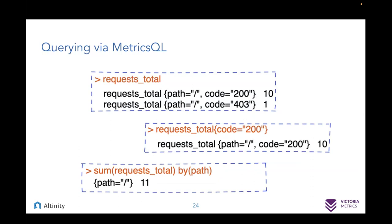I want to give some examples of how MetricsQL works. The first query requests all metrics with the name 'request_total', and we get two time series in response. The second query requests only those time series which have status code 200 — you specify the code in curly braces and filter your results. The third query does an aggregation — it summarizes all time series with name 'request_total' and groups them by label 'path'.